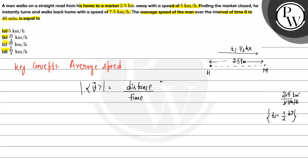Finding the market closed, he returns back, walks with a speed of 7.5 km. So how much time is this? 10 minutes at this speed. So how much distance is he going to cover? Time is already known, we need to look at the distance.